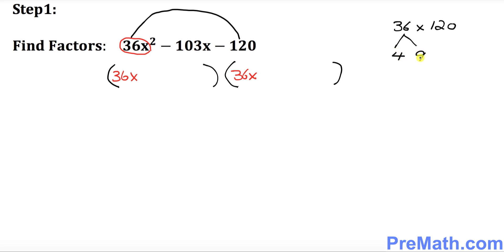4 and what? 9 is 36, isn't it? How about 120 is what? Isn't it 8 times 15 is 120? So that means whatever that you multiply, that number, that's what you're going to get these factors. Here you have to watch out.